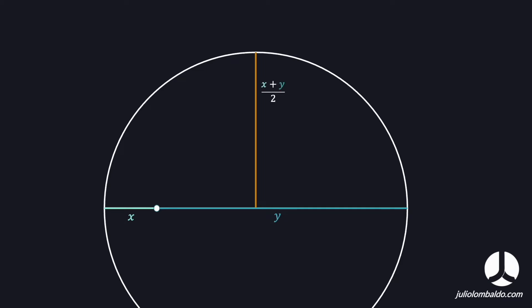We can call this orange measure the radius, and the radius is diameter divided by 2. After this, we share a point on the circle and form a triangle — a right triangle with a 90-degree angle. We can understand that this measure is the square root of X times Y.